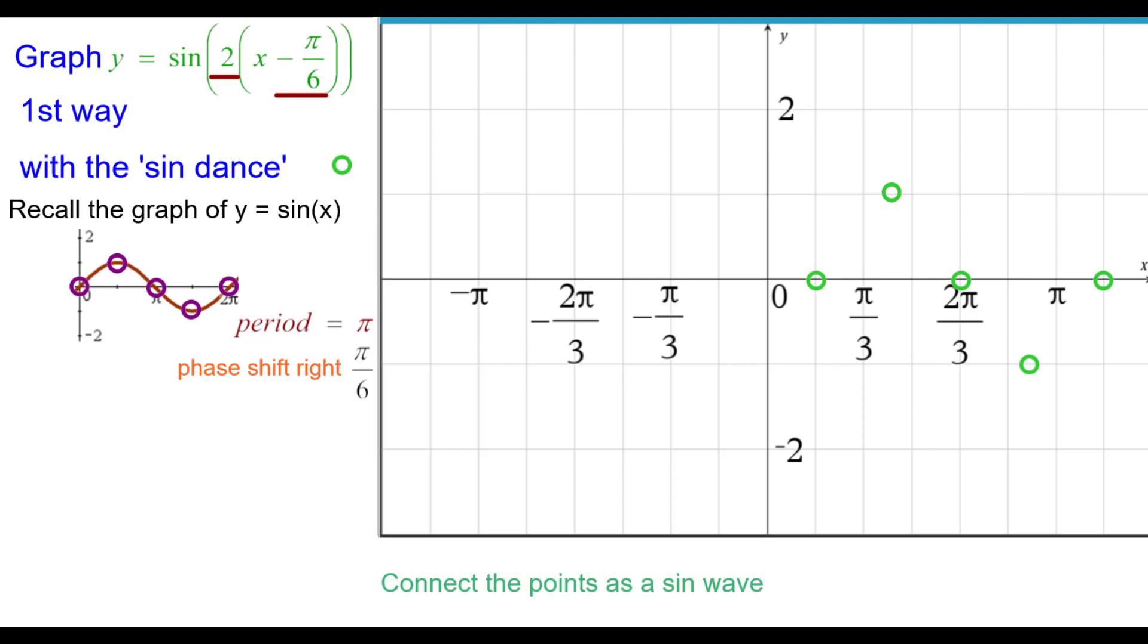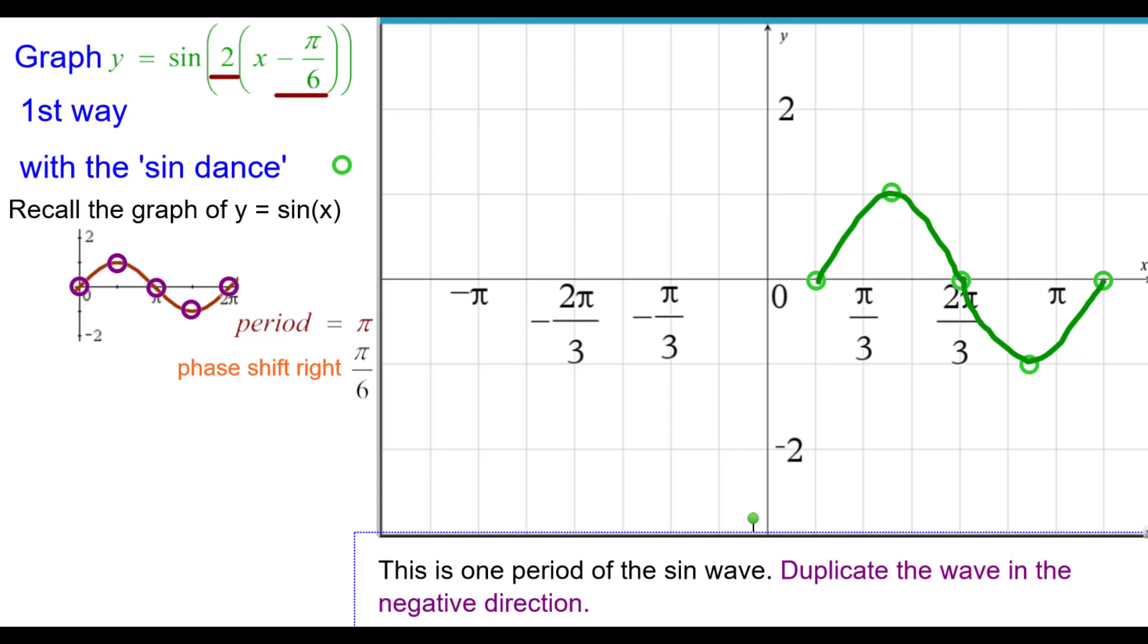Connect the points as a sine wave. Frown or concave down. Smile, concave up. This is one period of a sine wave. We're going to duplicate it in the negative direction to the left. And so starting at this point of inflection, we go back a period which is pi. From this max, we go back a period which is pi. From the second point of inflection. And from the minimum. And now we can connect the points again as a sine wave.